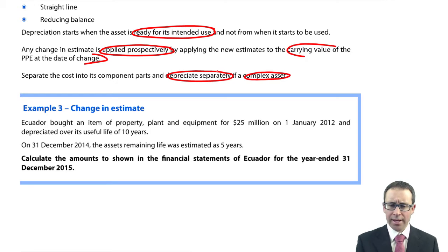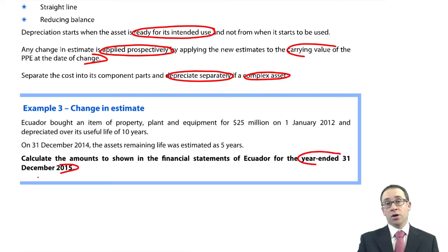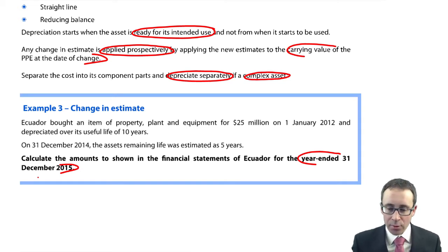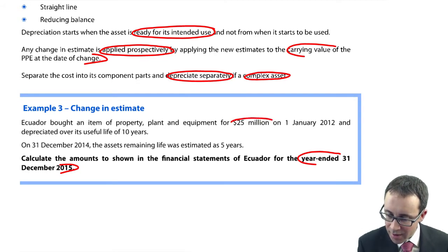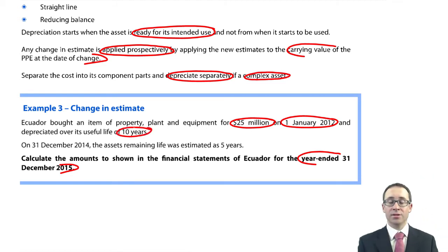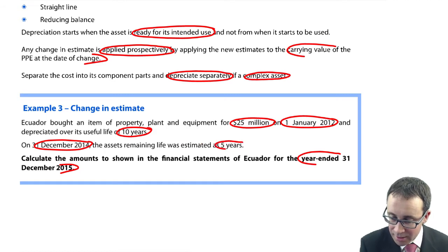So what have we got here? Calculate the amounts to be shown in the financial statements of Ecuador — SFP, profit or loss, OCI, statement of changes in equity, statement of cash flows if you so wish. The main focus is SFP and profit or loss, because that feeds in numerically to what you tend to see within the group accounts question. Ecuador bought an item of property, plant and equipment for $25 million on the 1st of January 2012, and depreciated it over 10 years — so that's 2.5 million per annum. On the 31st of December 2014, the asset's remaining life was estimated as five years.